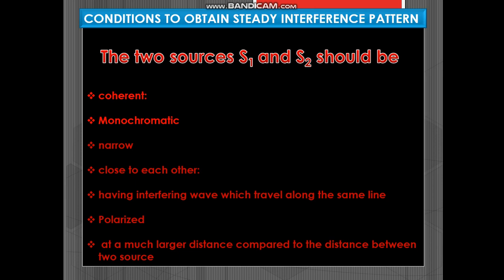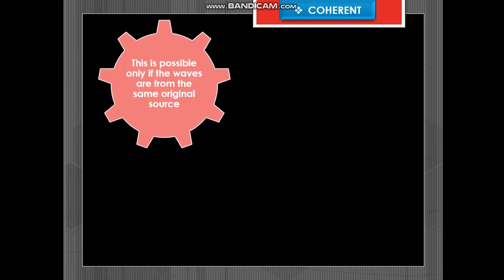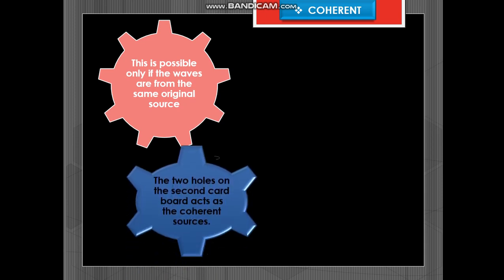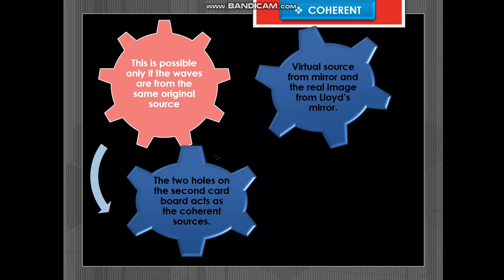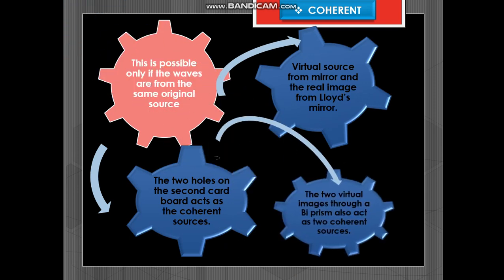Now let us analyze one by one. Let us see what is coherent. This is possible only if the waves are from the same original source. The two holes on the second cardboard or in Young's experiment act as coherent sources. The virtual source from the mirror and the real image from Lloyd's mirror and also the two virtual images through a biprism also act as coherent sources.